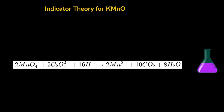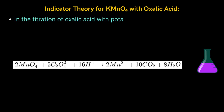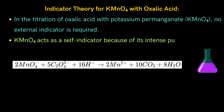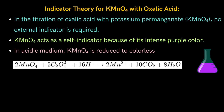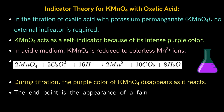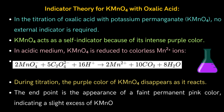Here we understand the indicator theory for KMnO4 with oxalic acid. In the titration of oxalic acid with potassium permanganate, no external indicator is required. KMnO4 acts as a self-indicator because of its intense purple color. In acidic medium, KMnO4 is reduced to colorless Mn2+ ions. During titration, the purple color of KMnO4 disappears as it reacts. The endpoint is marked by the appearance of a faint permanent pink color, indicating a slight excess of KMnO4.